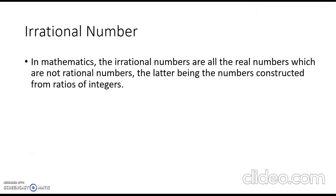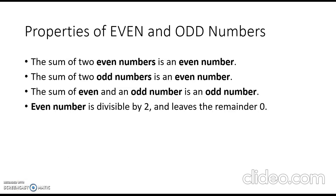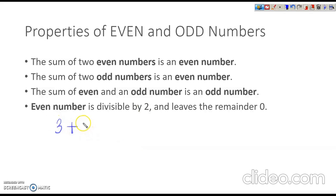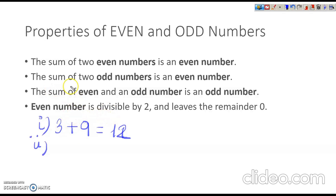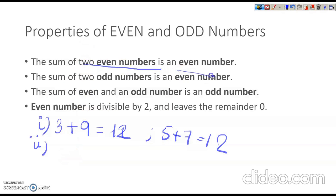Properties of even and odd numbers. The sum of two odd numbers is even. For example, 5 plus 7 is 12, which is even. And the sum of two even numbers is also even — so 6 plus 2 is 8, and 10 plus 12 is 22, both even.